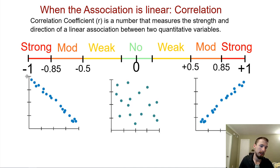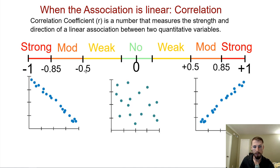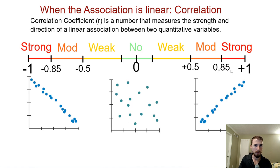The correlation coefficient r goes from negative one to positive one. Negative one is the strongest possible negative correlation, and positive one is the strongest positive. The middle would be zero. From roughly negative one to -0.85, we might consider that a strong linear association. From about 0.85 to 0.5 is moderate, and weak is somewhere below that. At some point, close to zero, we would say there's just no evidence of an association. These are somewhat subjective.